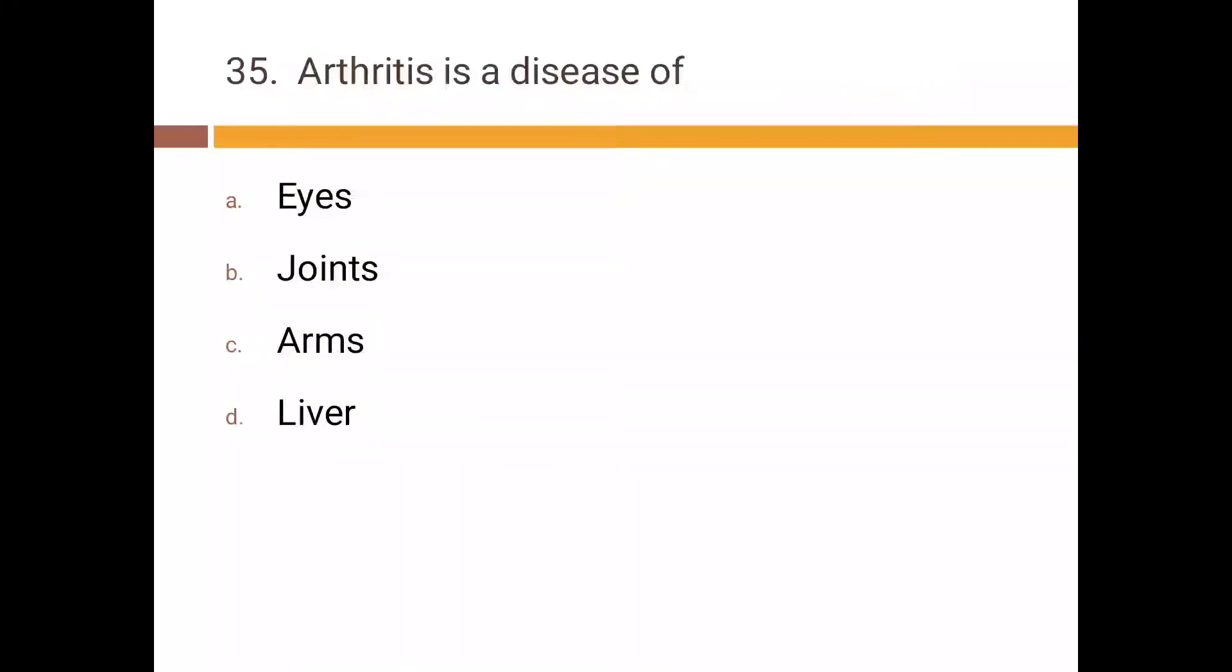Arthritis is a disease of: a) eyes, b) joints, c) arms, d) liver. Correct answer is b) joints.